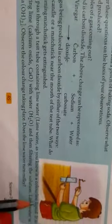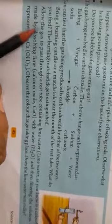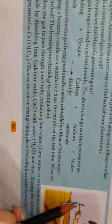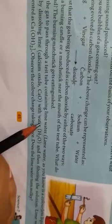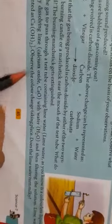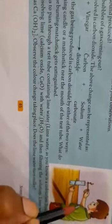The second method: allow the gas to pass through a test tube containing lime water. Lime water is a colorless liquid made by dissolving lime — calcium oxide — in water and then filtering the solution. We collect the gas being released and pass it through another test tube containing lime water. When carbon dioxide is passed through lime water, the color of the lime water changes to milky.